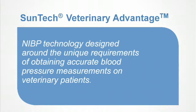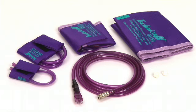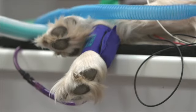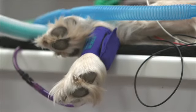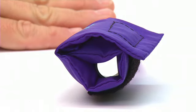SunTech Veterinary Advantage Non-Invasive Blood Pressure, or NIBP technology, has been designed around the unique requirements of obtaining accurate blood pressure measurements on veterinary patients. It measures systolic, diastolic, and mean NIBP values, with four different cuff sizes that comfortably fit a variety of patients. The unique 360-degree bladder allows for easy placement of the cuff.